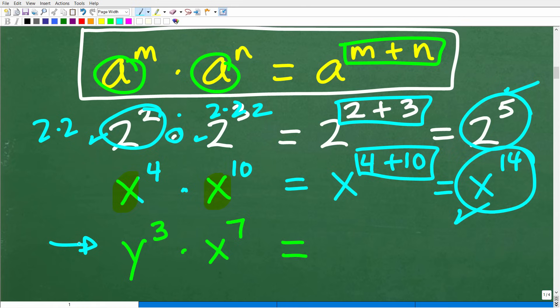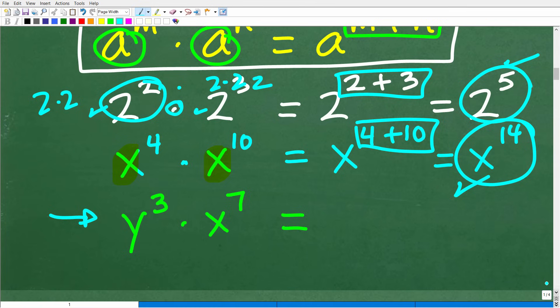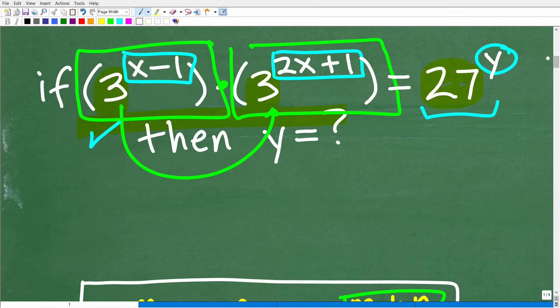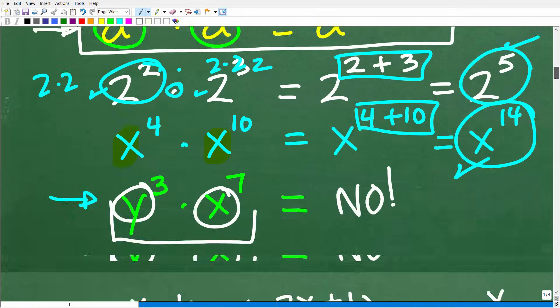Let's see how this works with variables. x to the fourth times x to the tenth. Are the bases the same? Yes, indeed, they are. We are trying to multiply. So all we have to do is simply add the exponents. So this would be x to the fourteen. Let's suppose we run into this problem. Y to the third times x to the seventh. Can we do anything here? The answer is no. This is as simple as we can write this expression. Why is that? Because these bases are different. So this rule only applies in situations where the bases are the same.